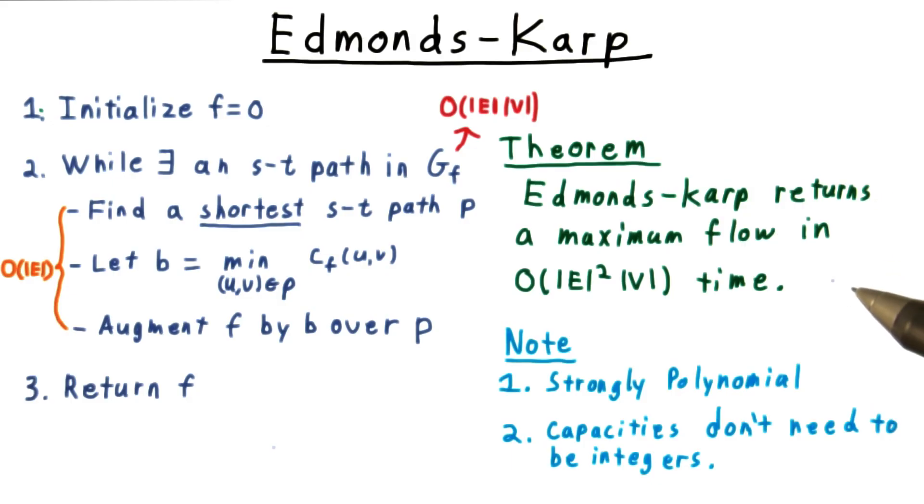Going back to the theorem, note that we've eliminated the dependence of the running time on the capacities. This means that the algorithm is now strongly polynomial. And actually, we can eliminate the requirement that the capacities be integers entirely.